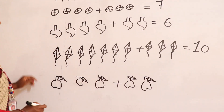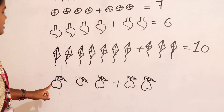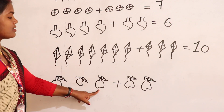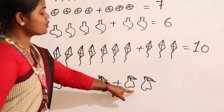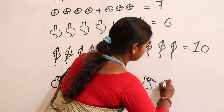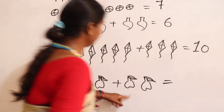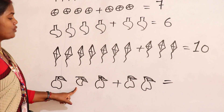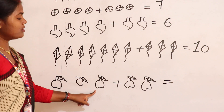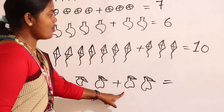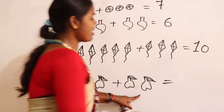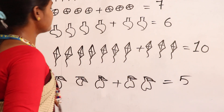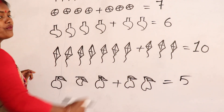This is 3 apples plus 2 apples. 1, 2, 3, 4, 5. All apples are 5.